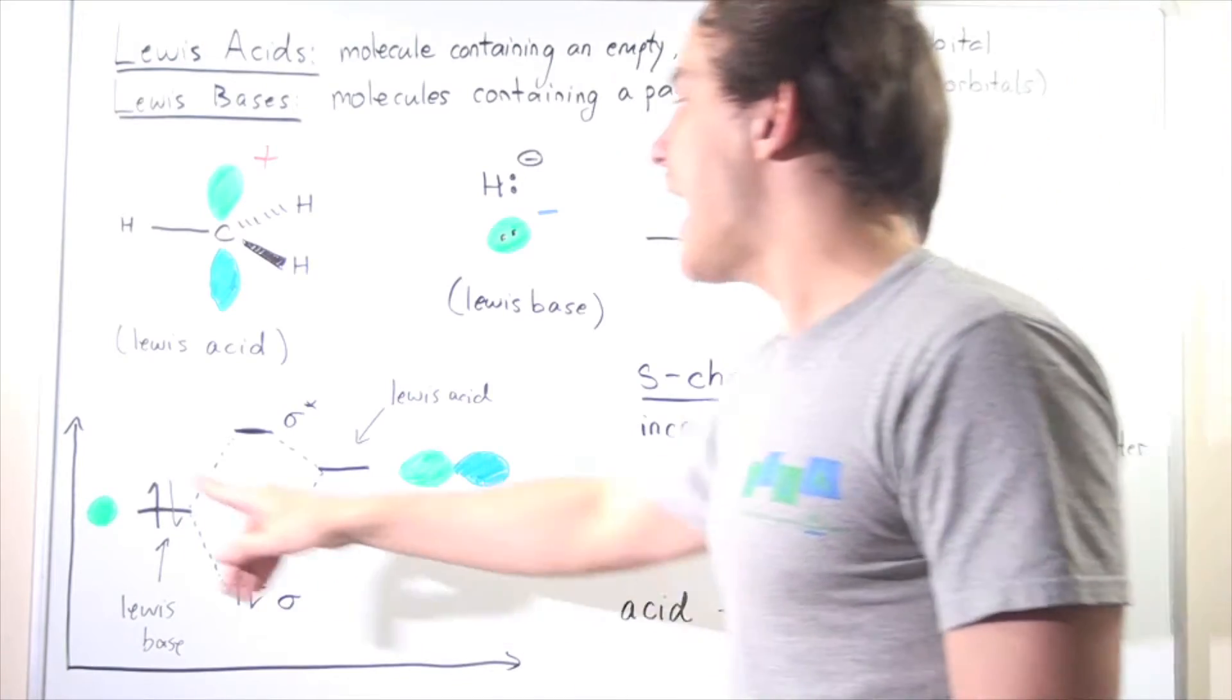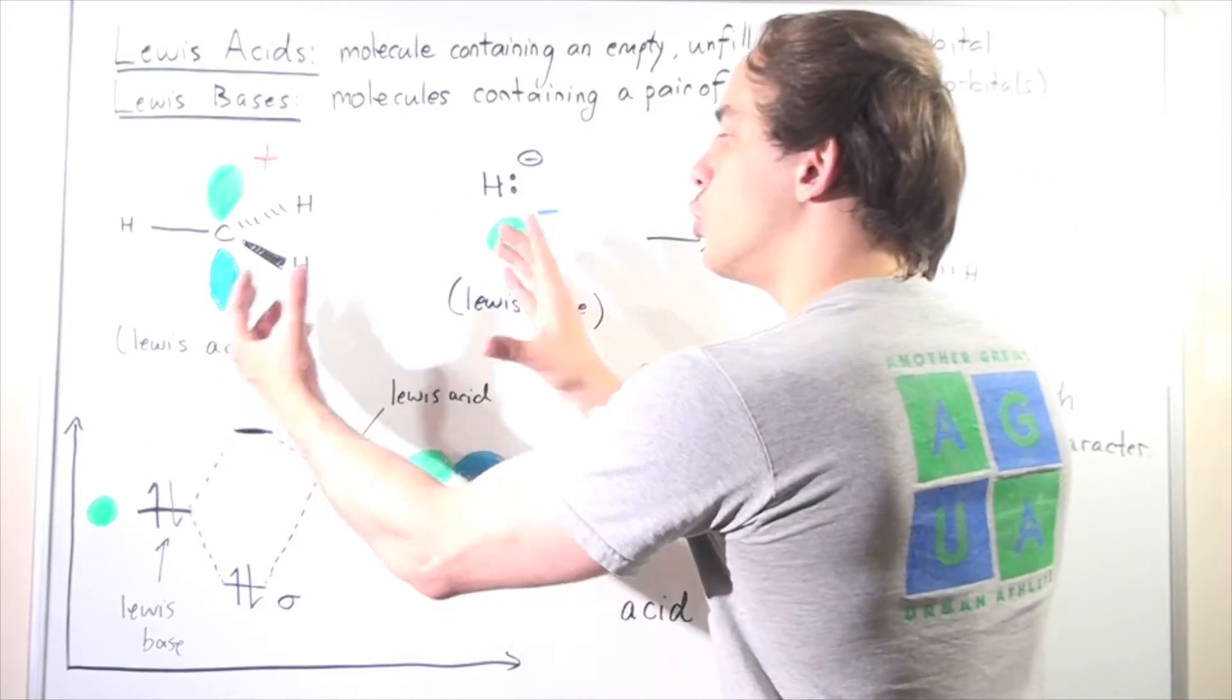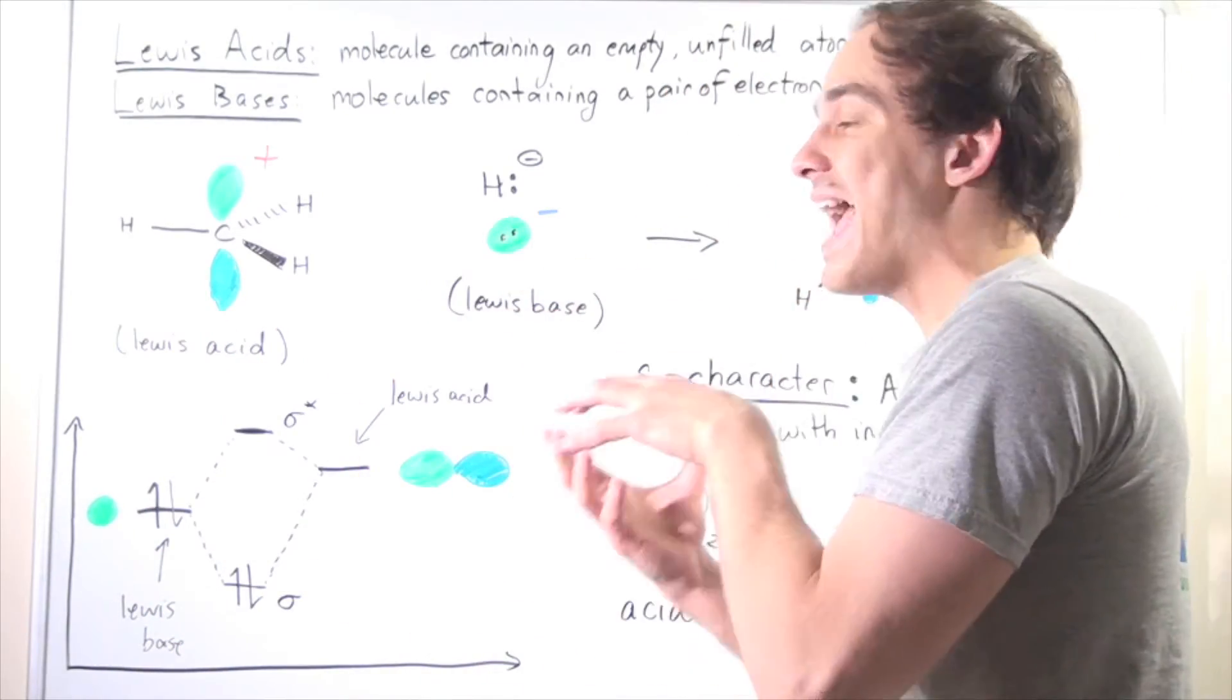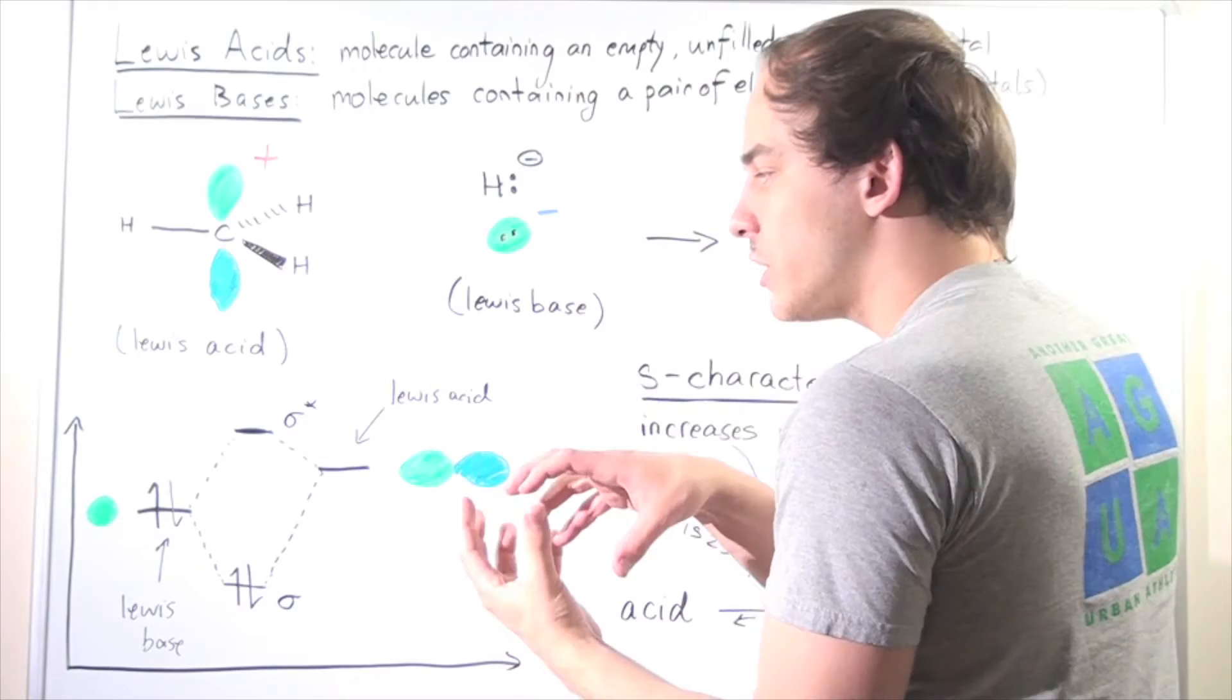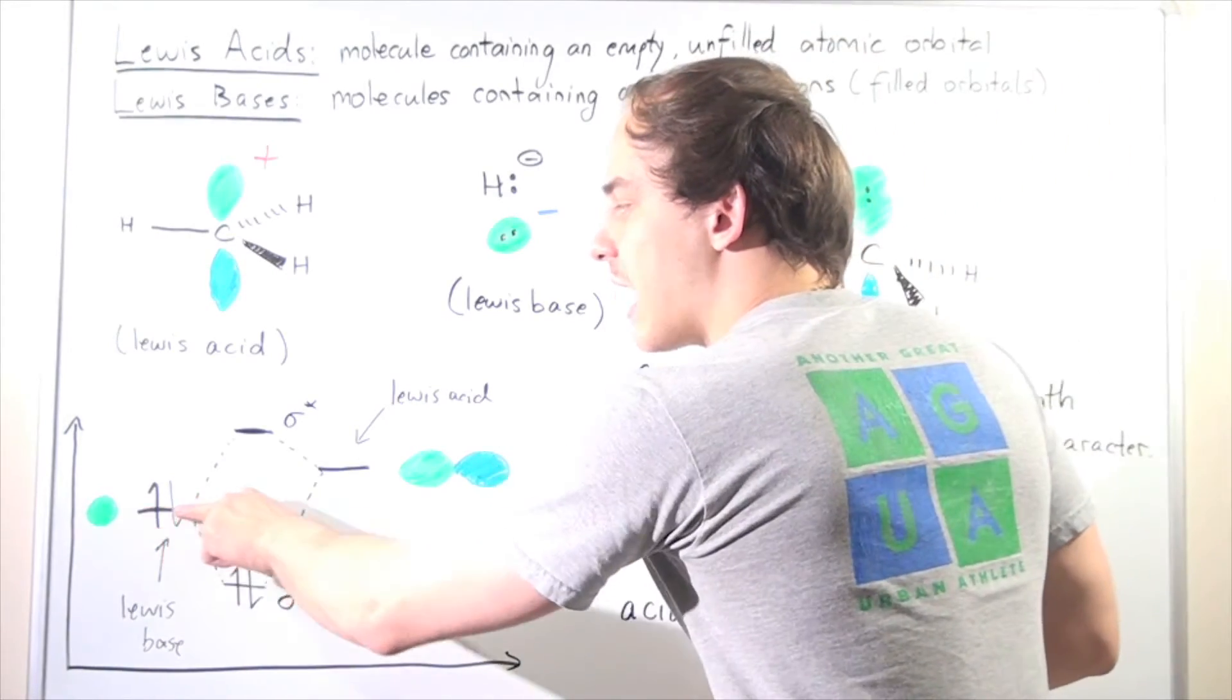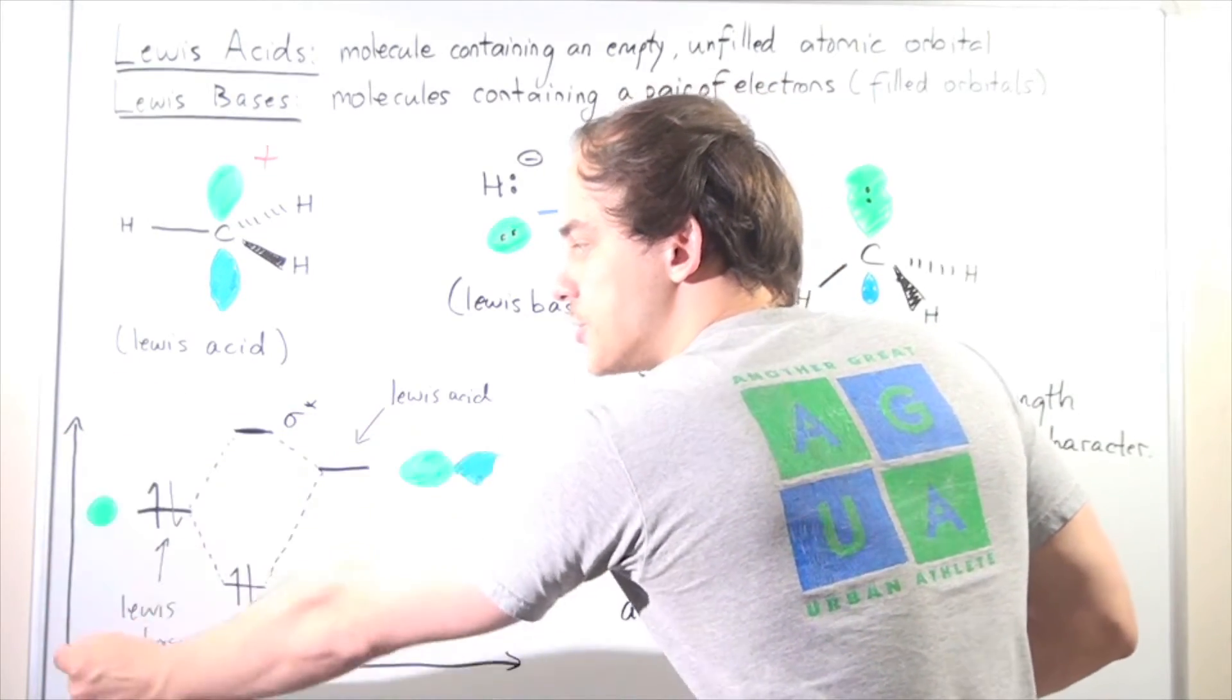Let's look at the energy diagram of our interaction, of our two Lewis acids and bases. Our 1s is lower in energy than the 2p, and that's because this is closer to our nucleus than this orbital is. So this guy will be found lower on the energy level, so the y-axis is the energy.